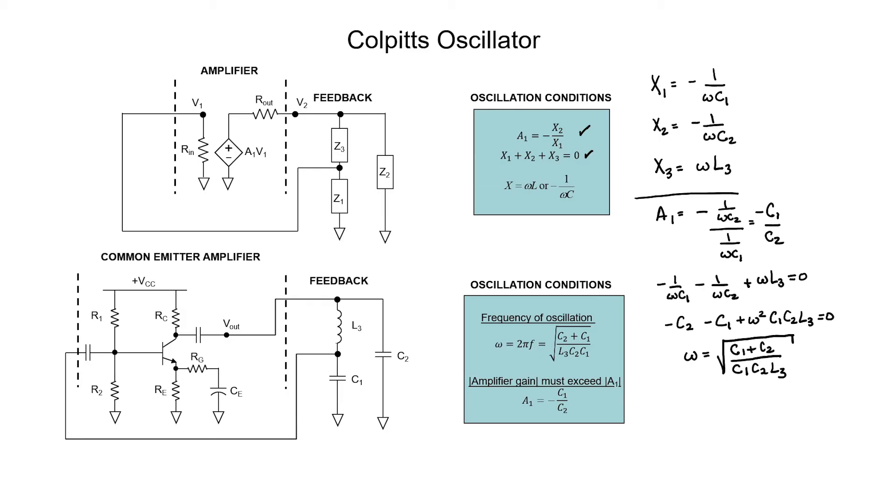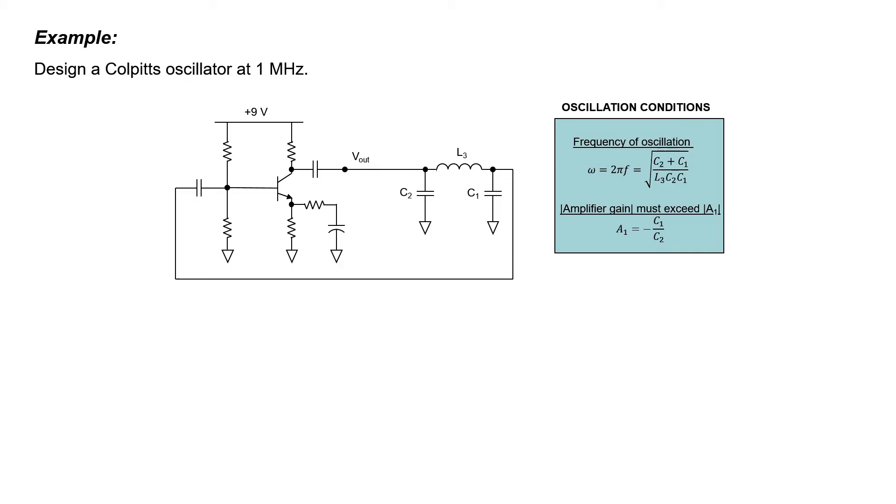But if we adjust inductor L3, then we can change the frequency of oscillation without affecting the gain. Let's now design a Colpitts oscillator with a nominal operating frequency of 1 MHz.